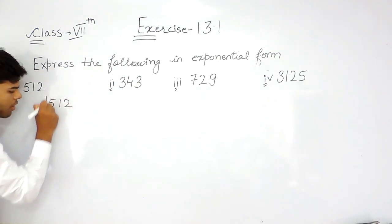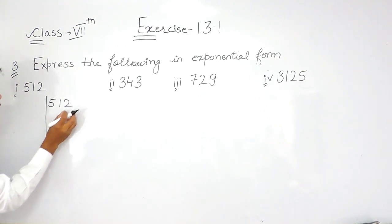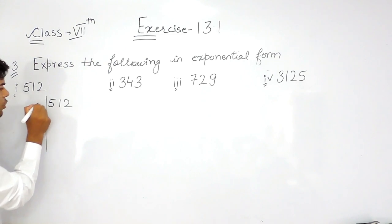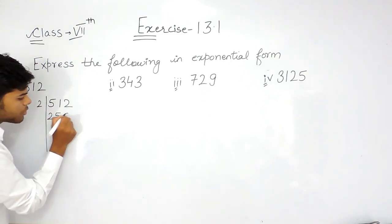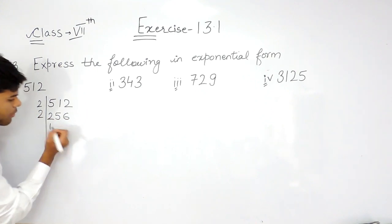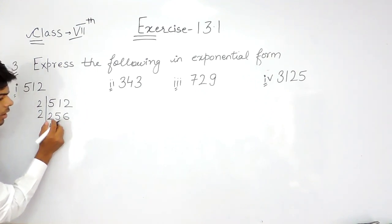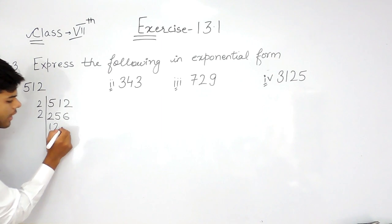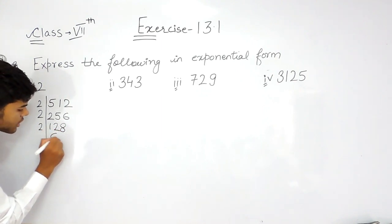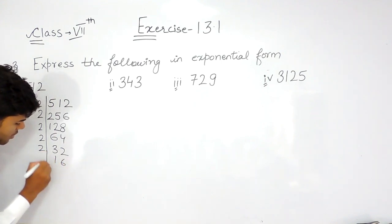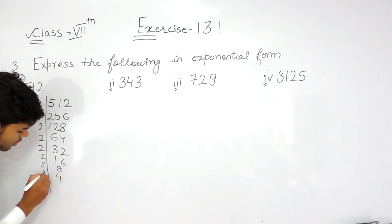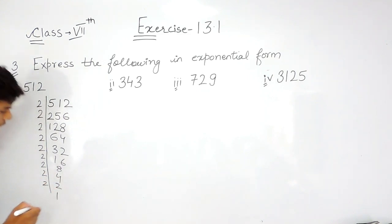First of all, 512 can be divided by 2 because it has the unit digit as an even digit. So, 2 times 256, 2 times 128, 2 times 64, 2 times 32, 2 times 16, 2 times 8, 2 times 4, 2 times 2, and 2 times 1.